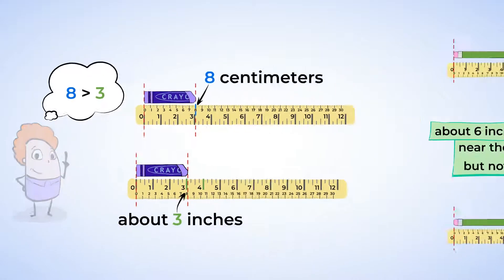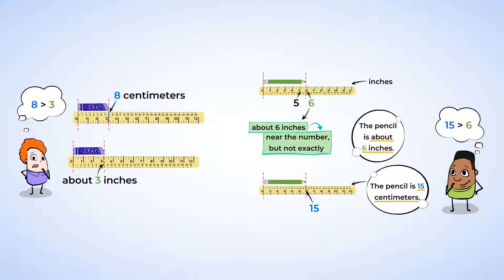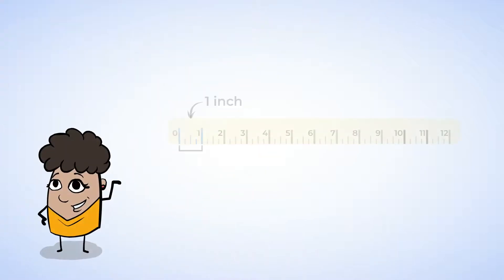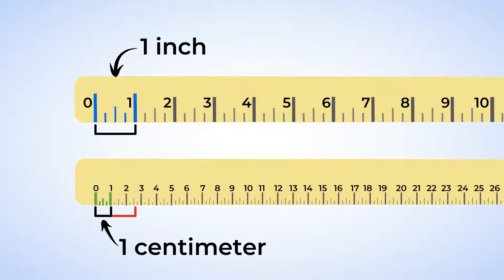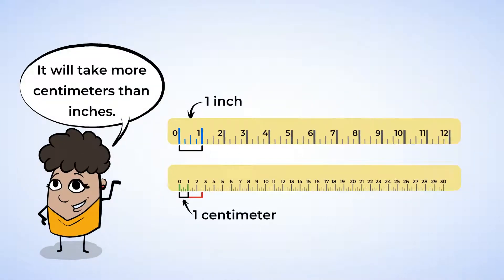Would you look at that? Both times that we measured, the number of centimeters was bigger than the number of inches. Why are our answers different? The pencil and the crayon didn't magically get bigger. Well, let's look at the size of 1 inch compared to the size of 1 centimeter. Uh-huh. The size of 1 inch is bigger than the size of 1 centimeter. So, when we measure, it'll take more centimeters than inches, because a centimeter is smaller.